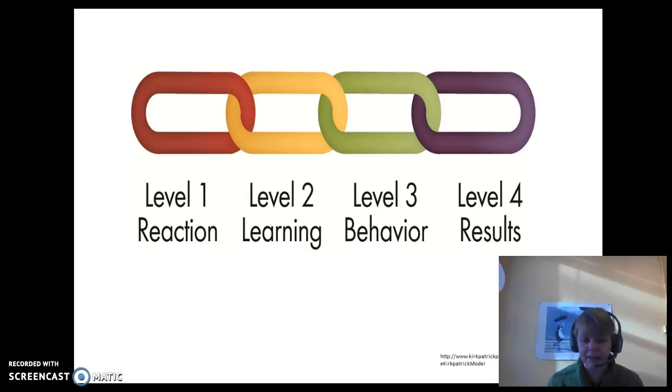Rather than using a pyramid, I like this newer look at Kirkpatrick's levels, where it shows that it has the same breakdown between reaction, learning, behavior, and results, but it shows how they're linked together. I think the pyramid kind of emphasizes one as being better than the other. I think that all four levels have some really good uses, and we're going to be talking about that throughout the course. Don't think of level four as being the best and level one as being the worst. All of them have their places.